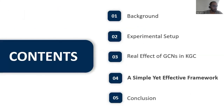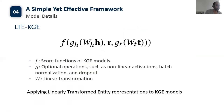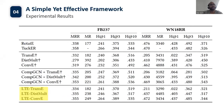Based on these observations, we propose a simple yet effective KGC framework named LTE-KGE. The proposed formulation is shown in the slides. Overall, it simply applies linear transformations to entity representations. LTE-KGE can well distinguish entities with different semantics by their generated entity representations, and it includes transformations for entity representations. We conduct experiments for DistMult, TransE, and ConvE. The results show that LTE-KGE significantly improves the performance of DistMult and ConvE. Although LTE-KGE does not explicitly model local graph structures like GCNs, it performs comparably to GCN-based KGC models and sometimes even performs better.